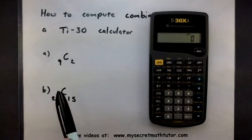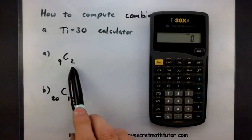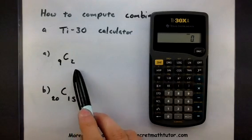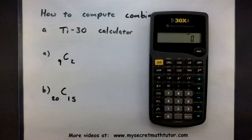Okay, so let's see how this works. If you want to do a problem like 9 combination 2, so selecting 2 from a group of 9, you can use our calculator.